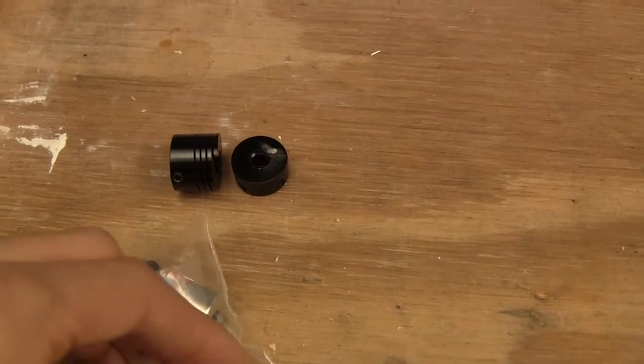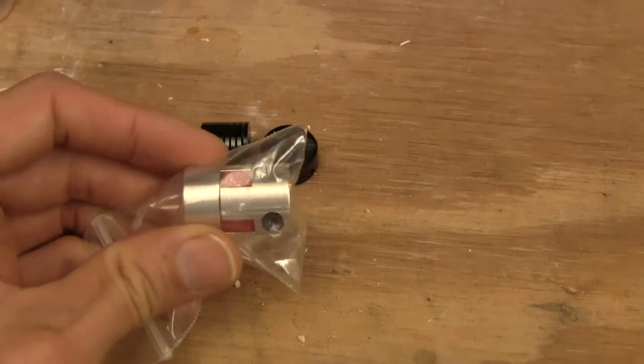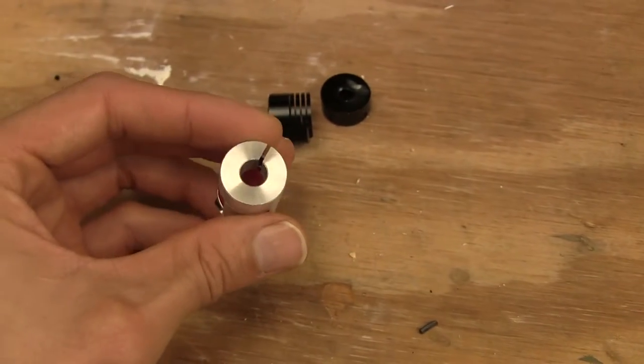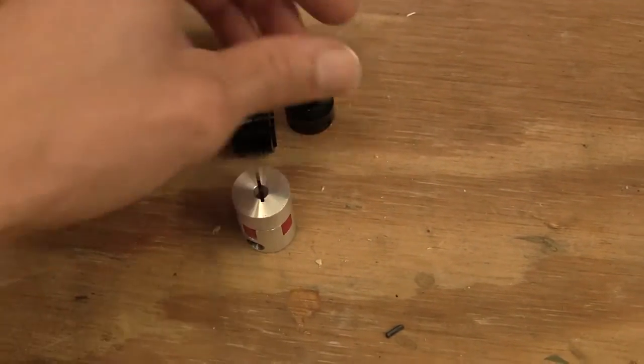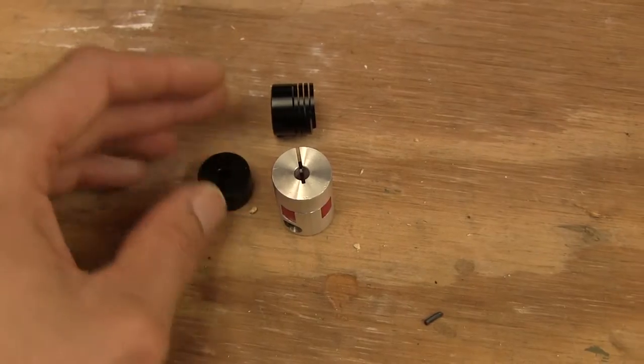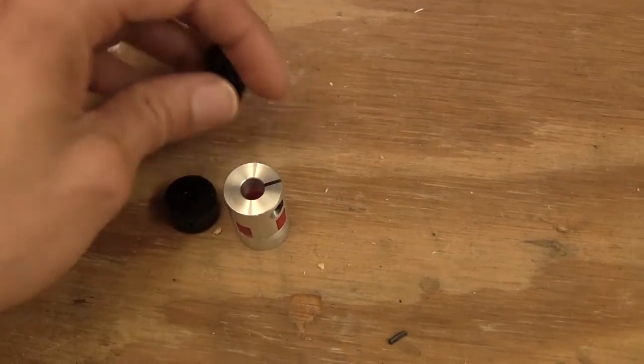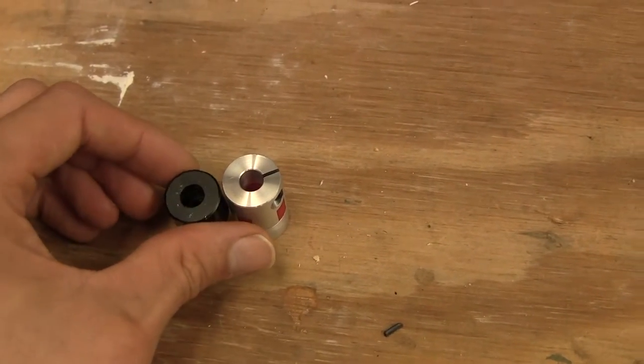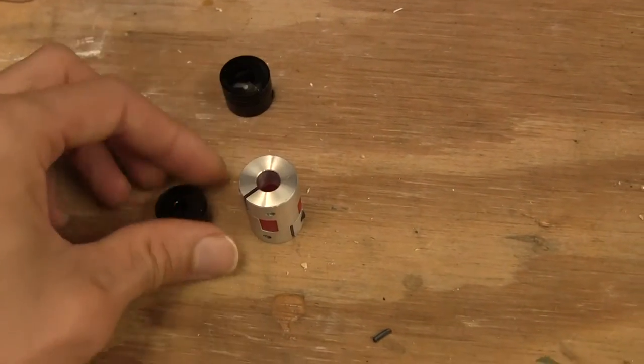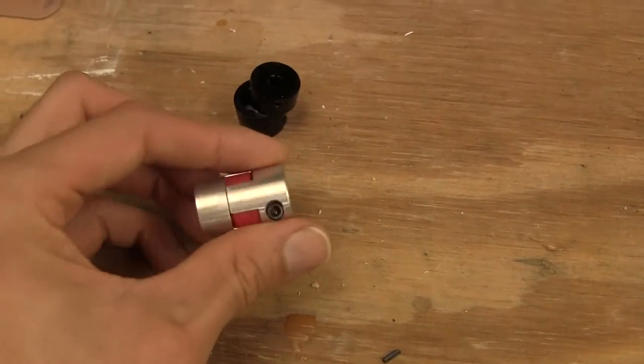So we went ahead and ordered the spider type coupler, but not from Zortrax because the parts are unavailable here in the US. This spider type coupler has a 5mm opening on one end, which matches the Zortrax coupler, and an 8mm opening on the other end. These couplers are available on eBay, shipping within the US. It was $10 for this coupler.